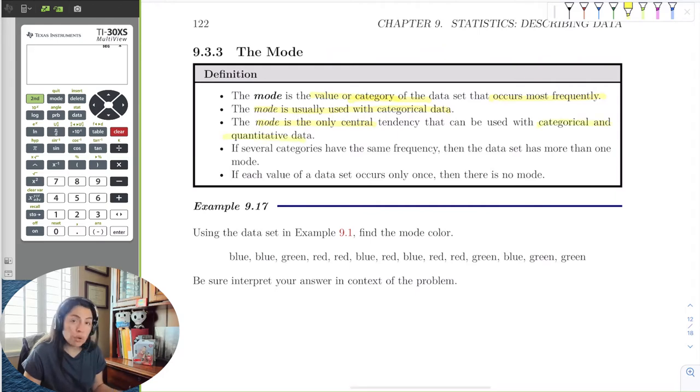Here is really important: if you see that a category has the same frequency, then the data set will have more than one mode. So if the highest number of observations are in two categories, then the mode will have two answers.